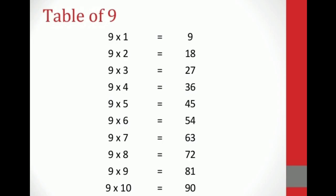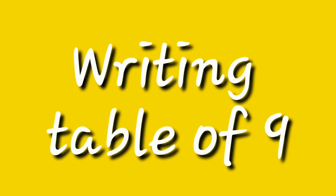If you learn the table of 9 by heart, that is good. However, if you are not able to memorize or write the table of 9, you have to follow the given tricks. First of all, let us talk about writing the table of 9. For this, write the counting from 0 to 9: 0, 1, 2, 3, 4, 5, 6, 7, 8, and 9.